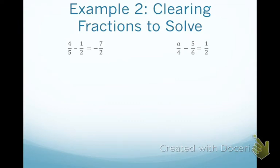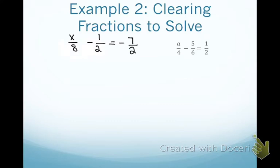That's example 1. In example 2, you should definitely be saying you see a lot of fractions. When we have fractions, we have one of two choices: we can find the LCD and work with it, or we can use a method called clearing fractions. There was a small typo, so write this corrected equation: x over 8 minus one-half equals negative 7 over 2.